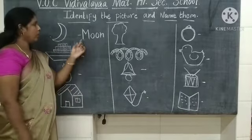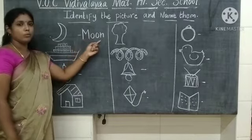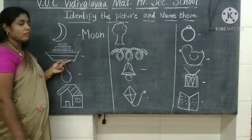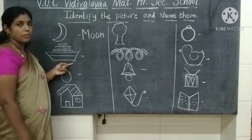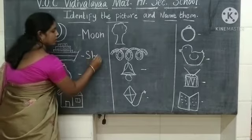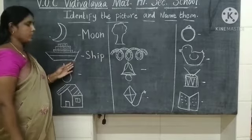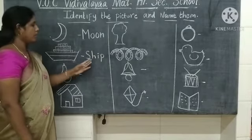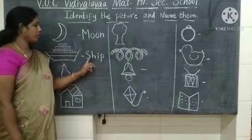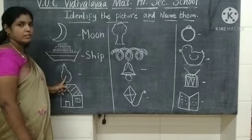What is the spelling of moon? I am going to write the letters. What is the spelling of ship? S-H-I-P — ship. What picture is this? This is a ship. What is the spelling of ship? S-H-I-P — ship.